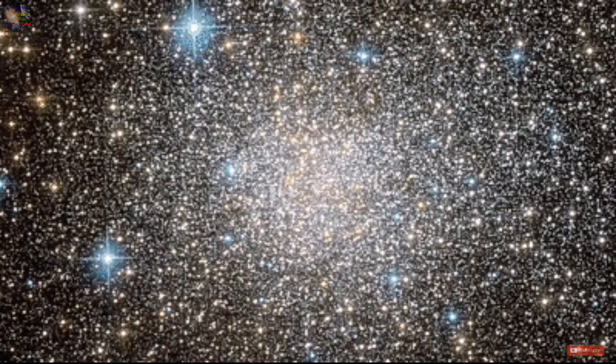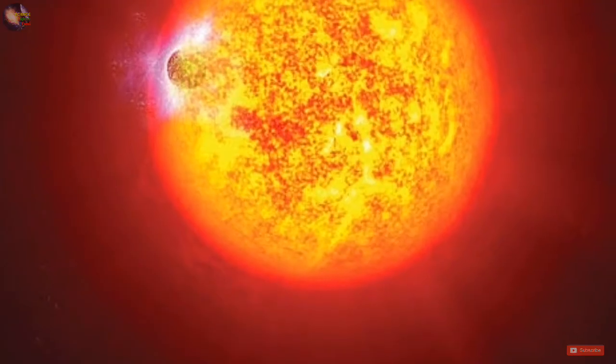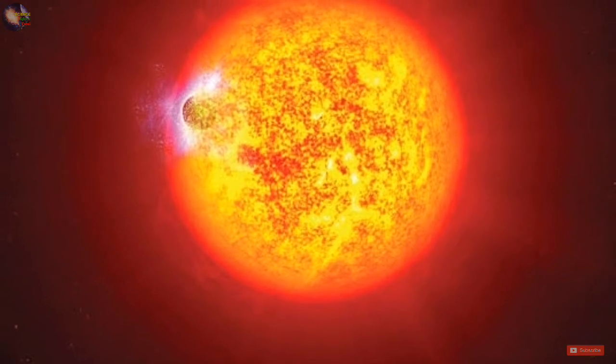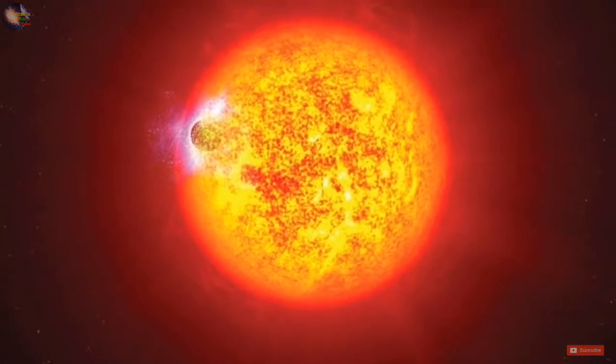Once the neutron star enters the red giant star, it diffuses the layers of the red giant, which causes the binary star system's orbit to decay.